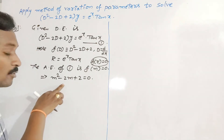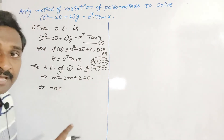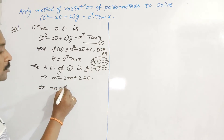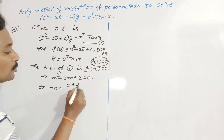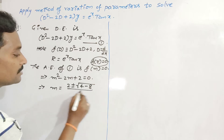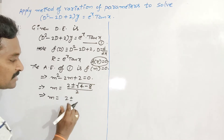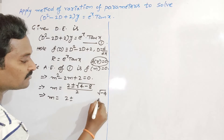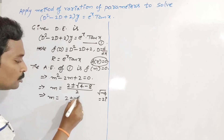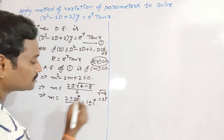This quadratic equation does not factor directly, so we use the quadratic formula: m = (−b ± √(b²−4ac)) / 2a. Here a = 1, b = −2, so m = (2 ± √(4 − 8)) / 2 = (2 ± √(−4)) / 2 = (2 ± 2i) / 2.